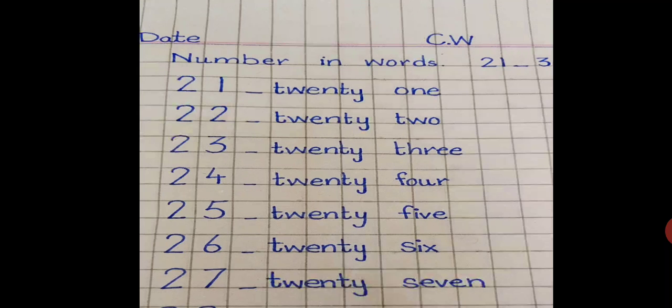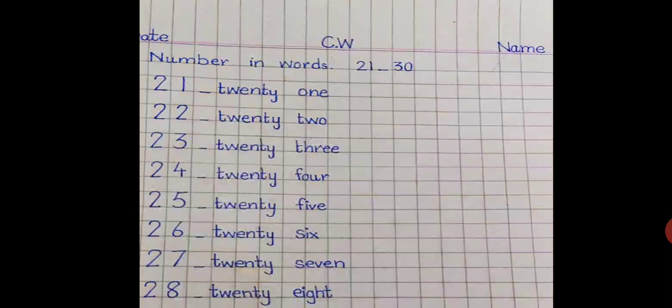Now spellings of 27: t-w-e-n-t-y. Take one finger gap and write s-e-v-e-n, 7. Twenty-seven. What comes after 27? 28. T-w-e-n-t-y, 20. Take one finger gap and write spellings of 8: e-i-g-h-t, 8. Twenty-eight.